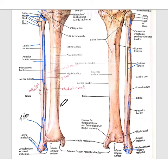In its anatomical position, it is held vertically downward. That's all about the fibula. See you in the next video.